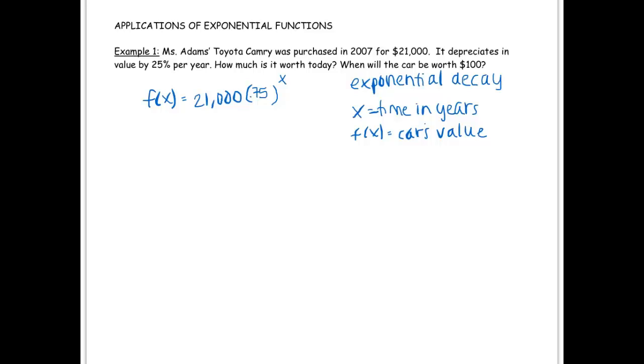So the first question says, how much is it worth today? Well, what year is it? It is the year 2013, which means that in 2013, it has been 6 years since the car was purchased. So we're going to do f of 6. So 21,000 times 0.75 to the 6th power. And if I do that on my calculator, that tells me that the car is worth about, right, because we're probably going to be rounding some decimal, $3,737.55.